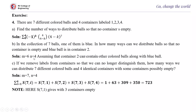The answer uses M = 6 and N = 4, assuming container 2 can contain other balls. Next, if we remove the labels from the containers so we can no longer distinguish them, how many ways can we distribute 7 different colored balls into 4 identical containers with some containers possibly empty? Here M = 7, N = 4, and the answer is the sum of S(7, i) for i from 1 to 4. S(7,1) gives 3 containers empty, S(7,2) gives 2 empty, S(7,3) gives 1 empty, and S(7,4) gives 0 empty. The answer is 877.